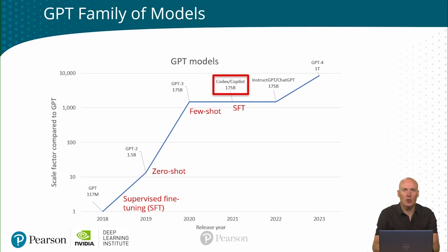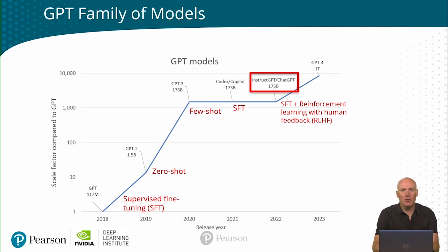Another model is known as Codex, also used in the co-pilot project. This is a specialized model for writing programs. This was enabled by using supervised fine-tuning, but this is a different type of supervised fine-tuning than the original GPT model. InstructGPT, which is the technology used in the ChatGPT product, used both supervised fine-tuning as well as reinforcement learning with human feedback, or RLHF. Both GPT-3, Codex, and InstructGPT use the same sized models, but they have different goals and they use different training methods. They are roughly the same architecture as GPT-1, but 1000x bigger.